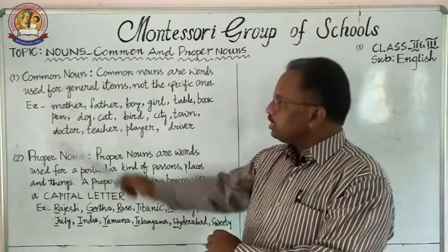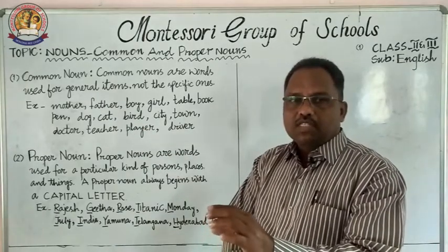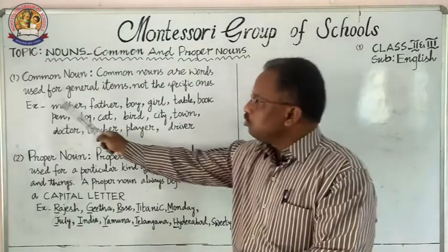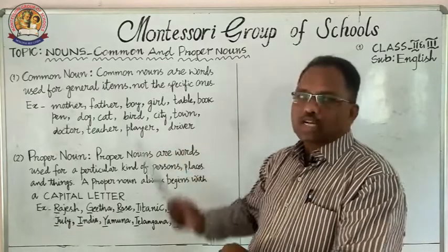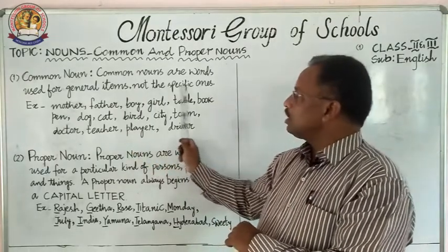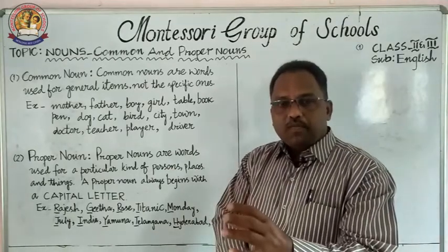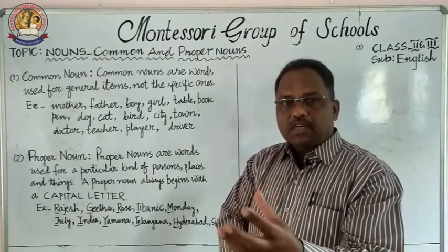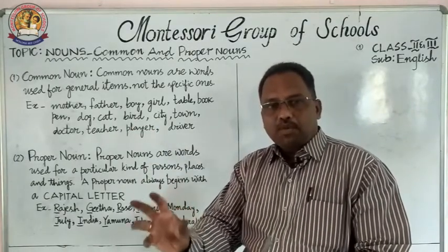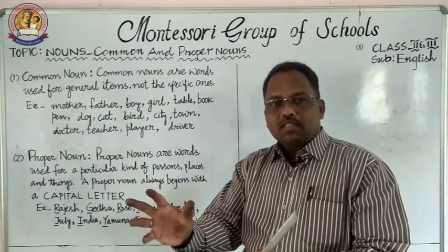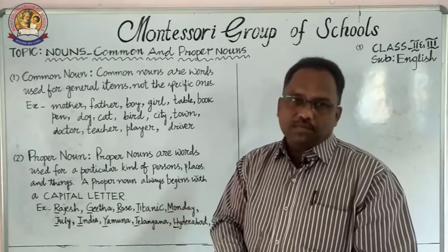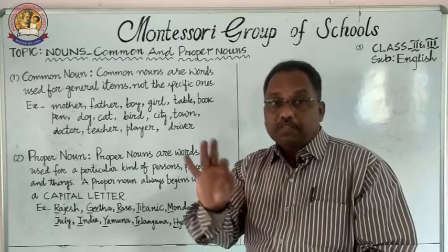What is a common noun? Common nouns are words used for general items, not specific ones. We use them for a common person, common place, or common thing — in general. A common noun is not used for a specific or particular person.